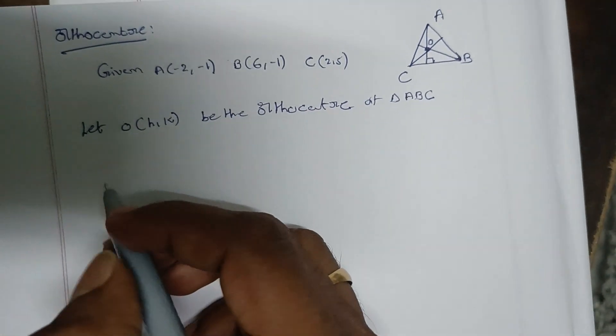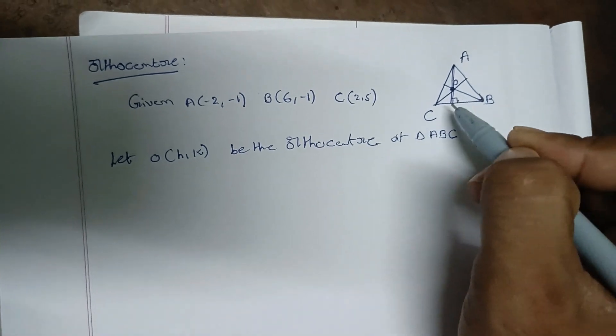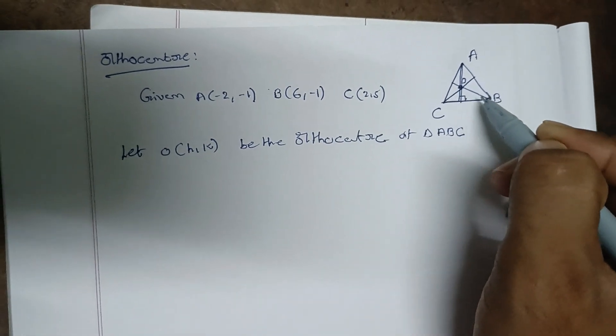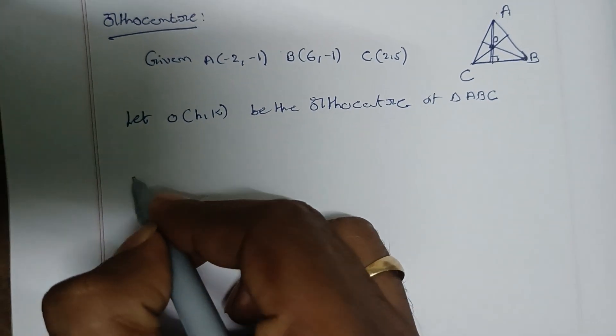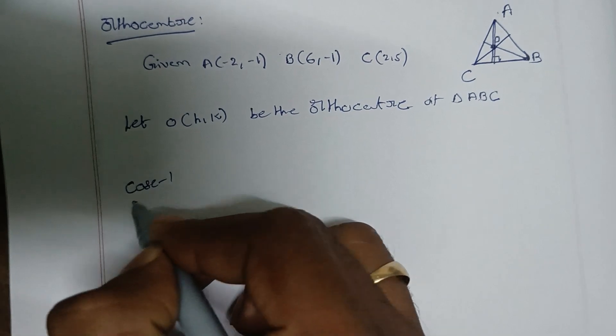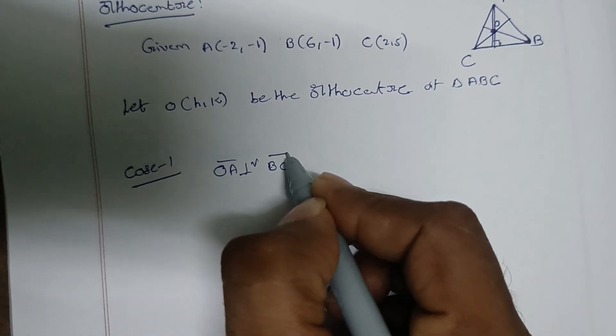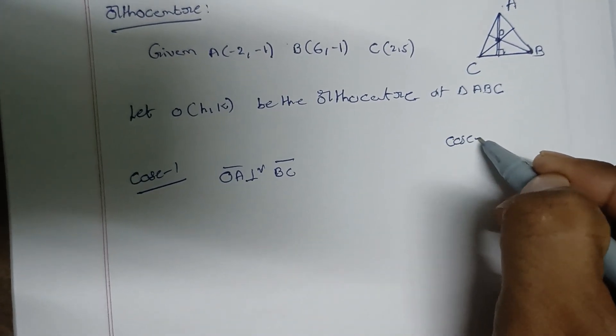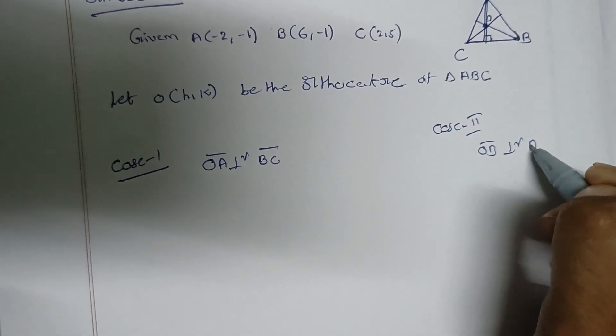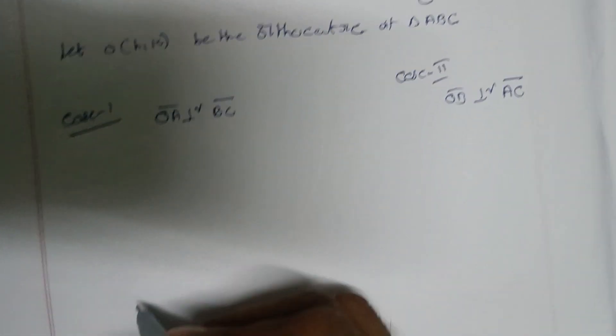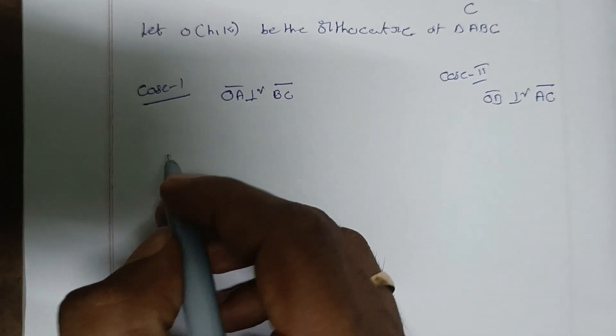We have two conditions: Case 1 - OA bar is perpendicular to BC bar. Case 2 - OB bar is perpendicular to AC bar.